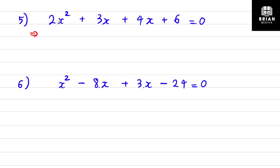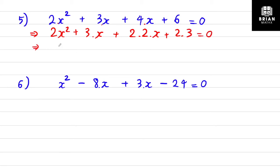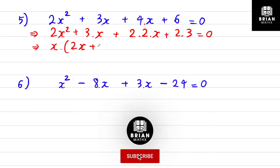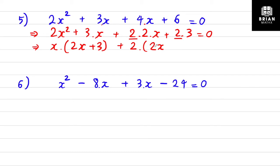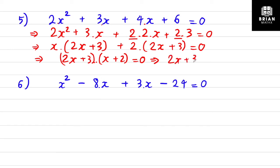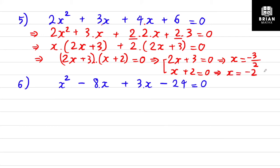Question 5: 2x² + 3x + 4x + 6. I rewrite 4x as 2 times 2x. For the first two terms, x is the common factor, giving x(2x + 3). For the next two terms, 2 is the common factor, giving 2(2x + 3). So (2x + 3) is the common factor and (x + 2) is the second bracket. Setting each bracket to zero: x = -3/2 and x = -2.